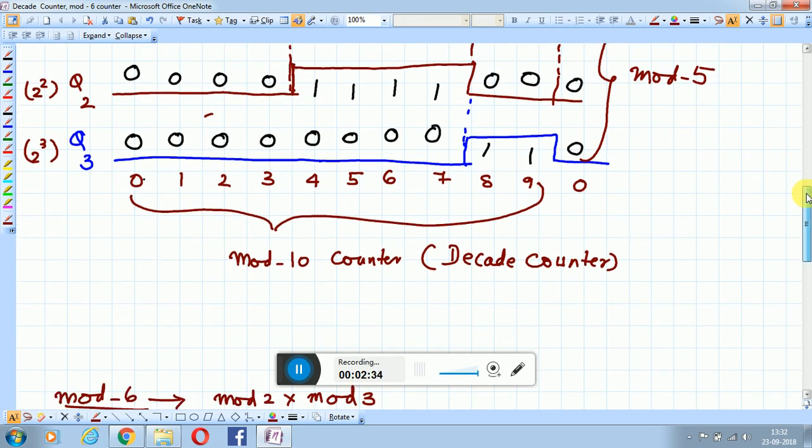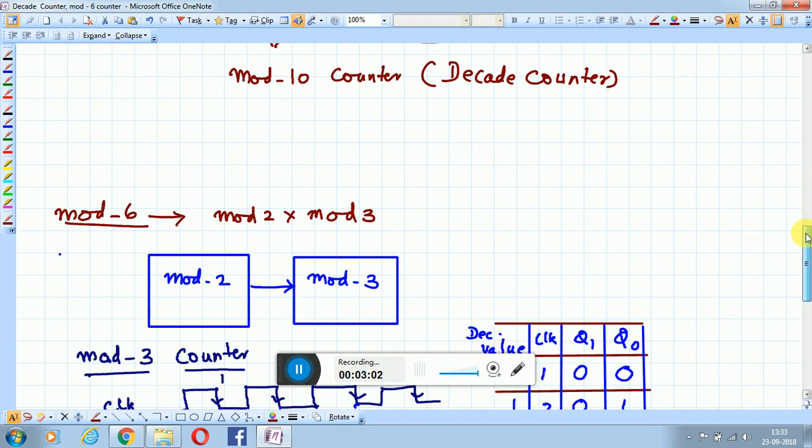This decade counter finds many applications. You can construct a digital clock by cascading multiple decade counters. Each counter counts from 0 to 9. If you connect two of them, it counts from 0 to 99. Three counters give 0 to 999, and four counters give 0 to 9999. This is how cascading of decade counters is used.